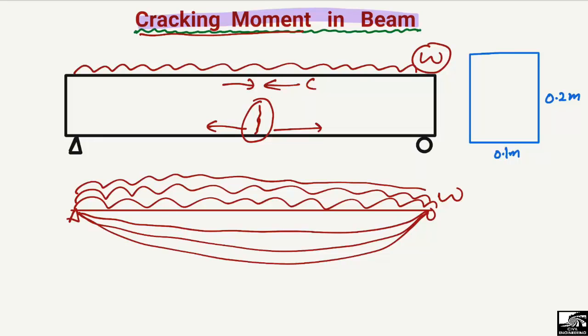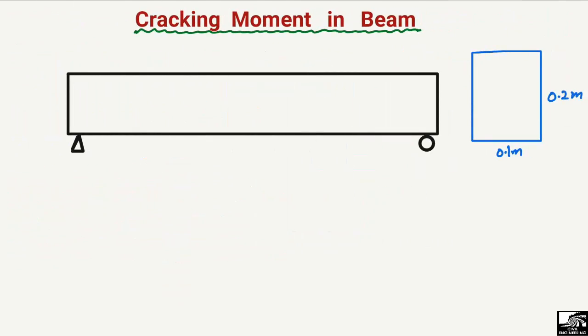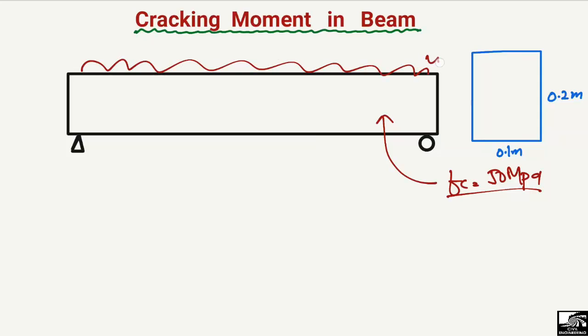Now, how can we find the cracking moment for a beam? If we have some cross-section with cross-sectional properties and a known concrete strength, how do we determine the cracking moment? Let's consider that we have a concrete compressive strength of 50 MPa, with some load W acting on the beam, and we want to find out the cracking moment M_cr at which the first crack starts.